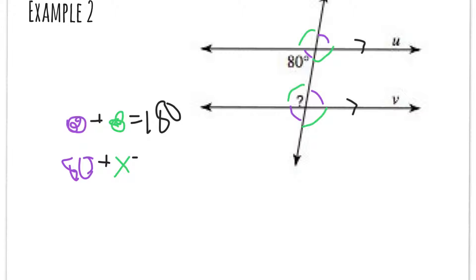Now from here I can just do 180 minus 80, and then I will get X equals 100. See how I got that?